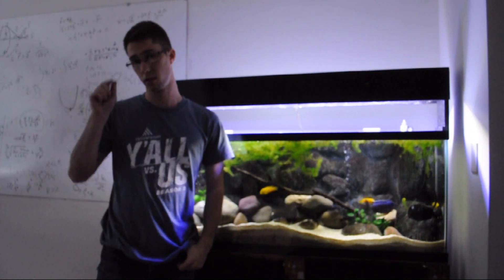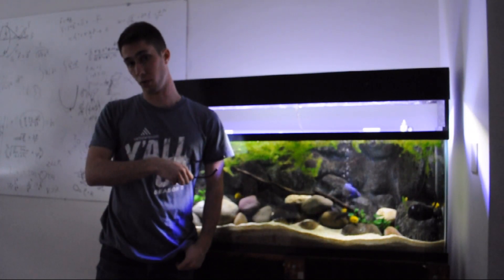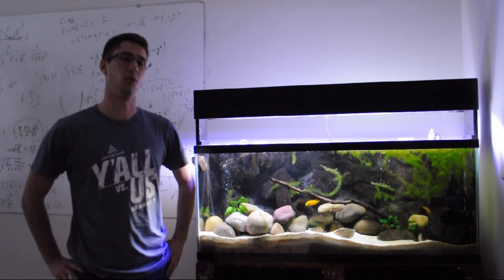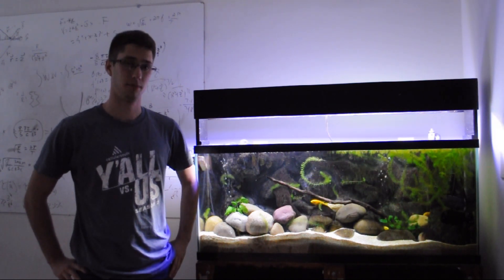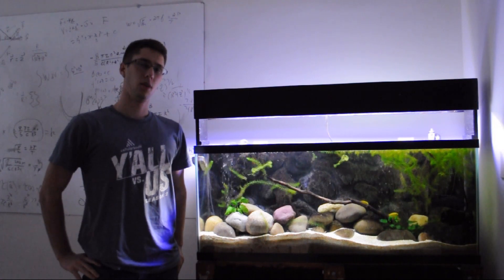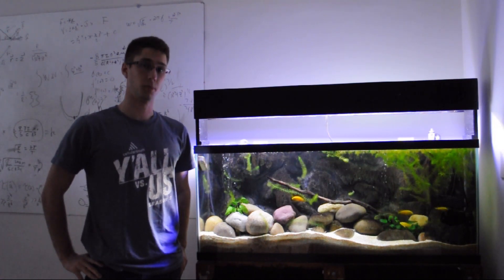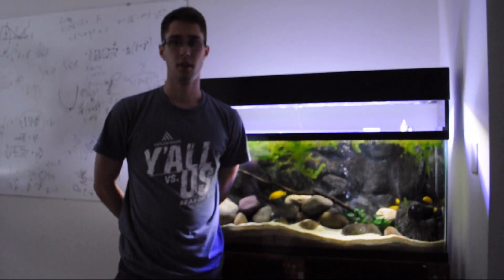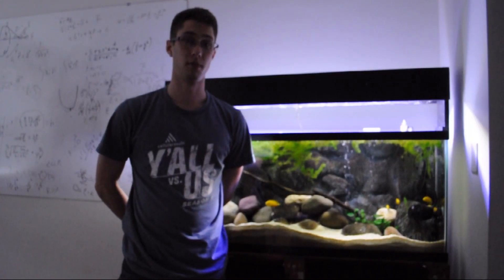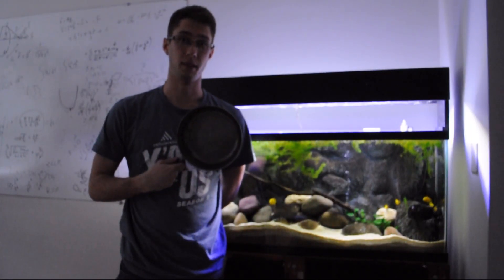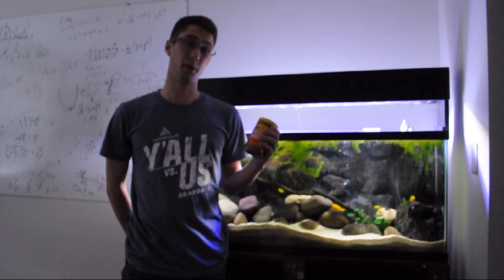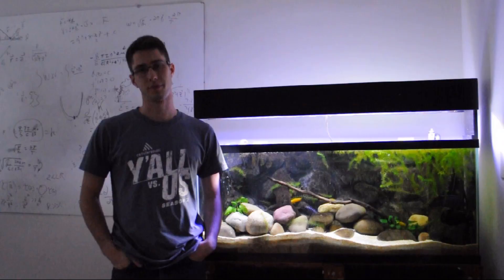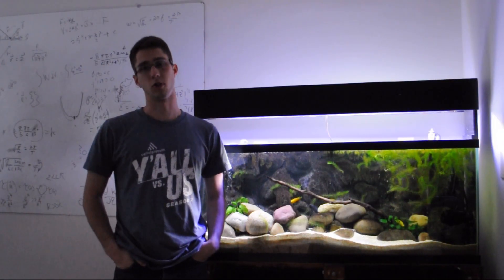So why are fish so smart? Because they swim in schools. What did the fish say when he ran into the wall? Damn. What did the sardine call the submarine? A can of people. What day of the week do fish hate the most? Friday.